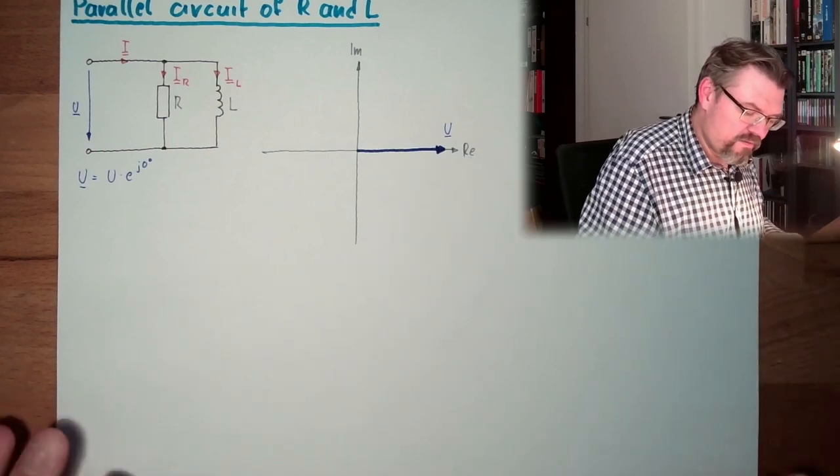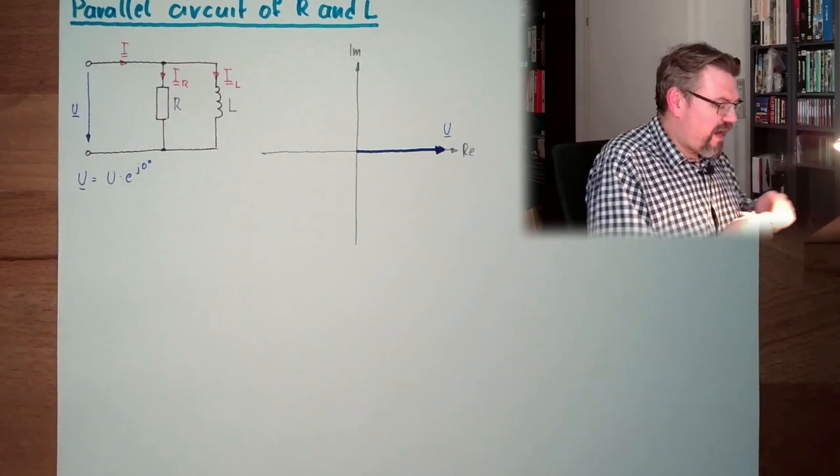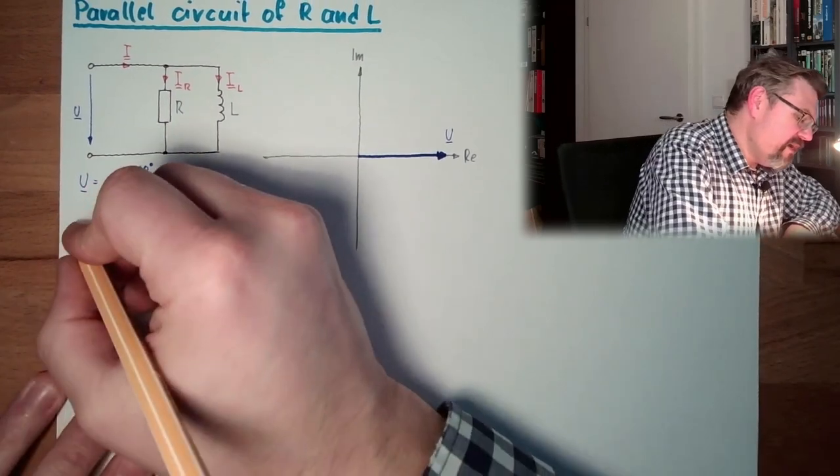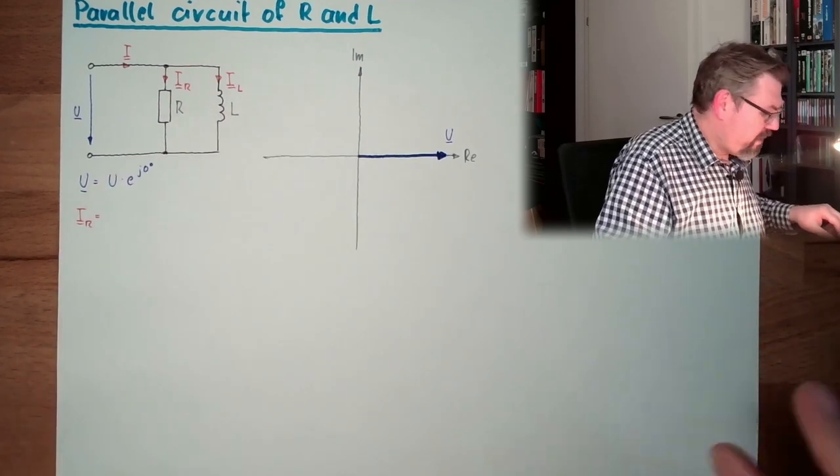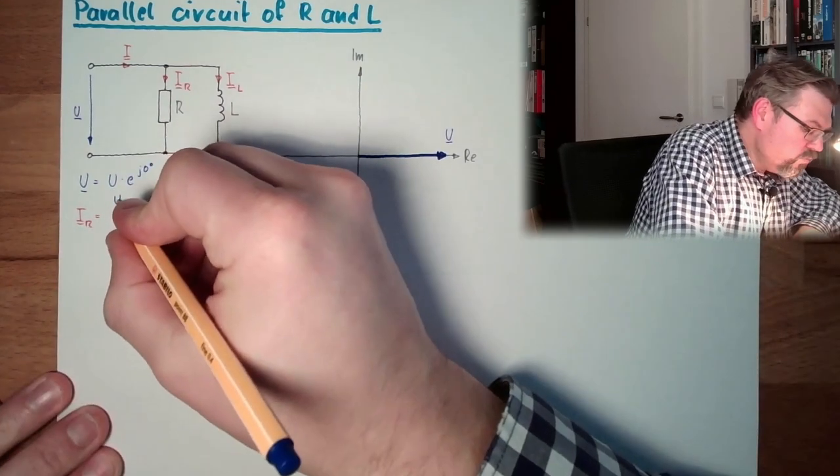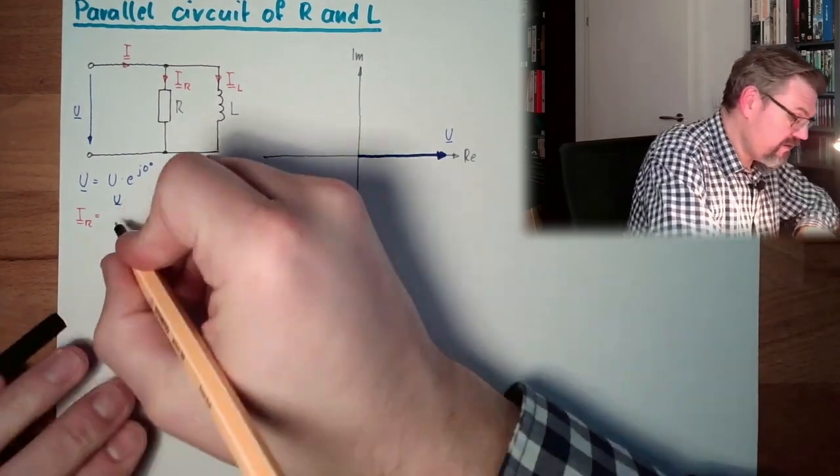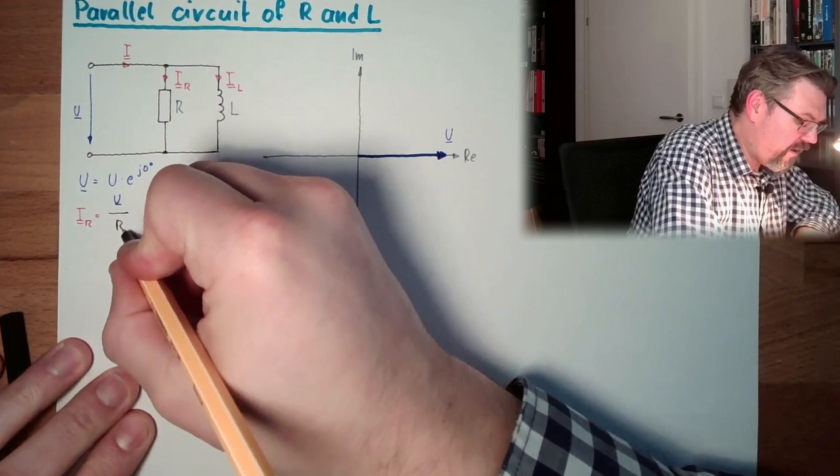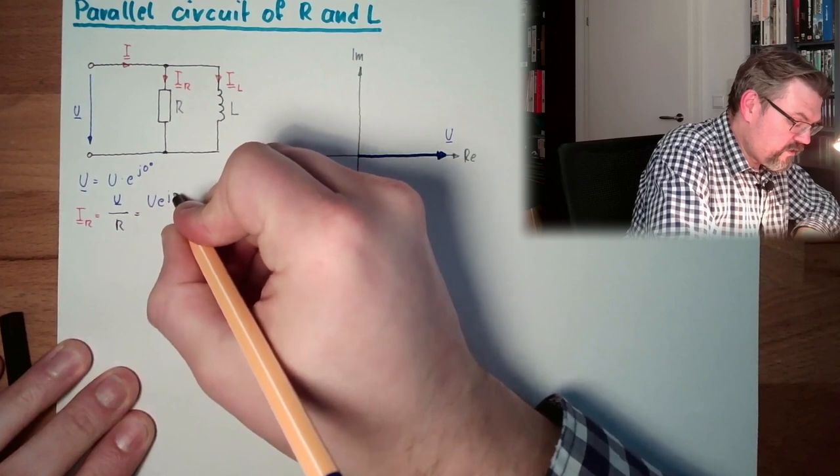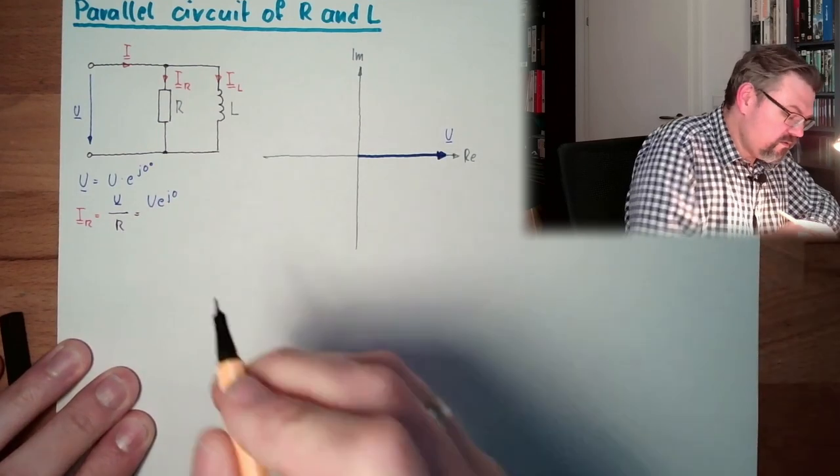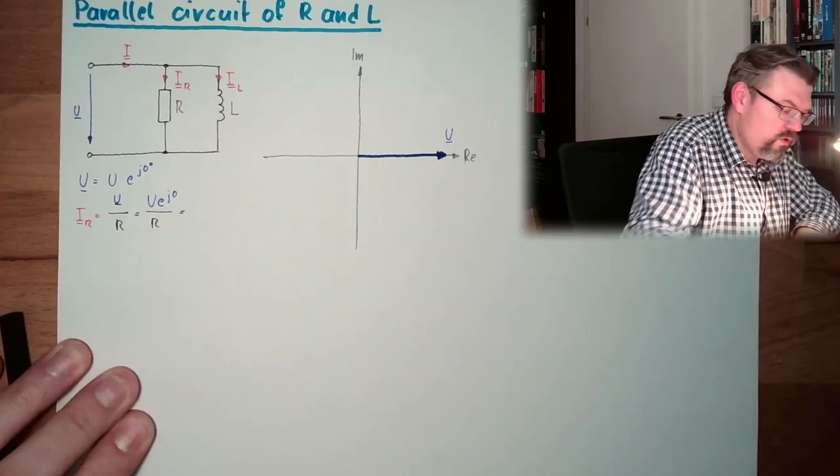This is my beginning assumption. Let's first calculate IR, because IR usually is very easy. The resistors are easy. So IR is U divided by R, Ohm's law, which is by the way important, divided by R. So actually we have U e to the j zero, e to the j zero divided by R.